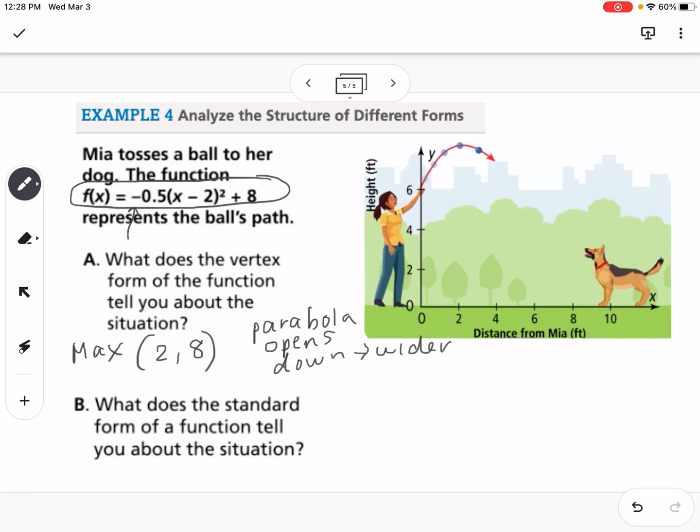Now we have to do a little work to put this in standard form. So (x - 2)² I can write as (x - 2)(x - 2). I'm going to FOIL the (x - 2)(x - 2), so I get x² - 2x - 2x + 4 + 8. Then I'm going to combine like terms. So I have x² - 4x + 4 + 8.